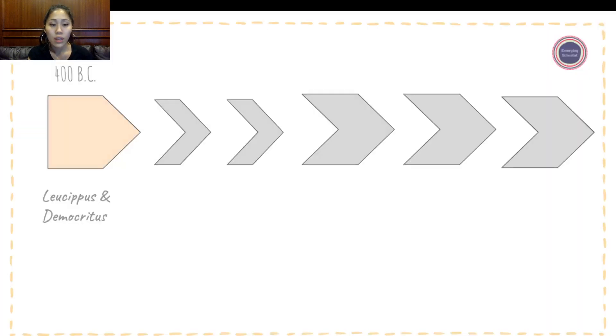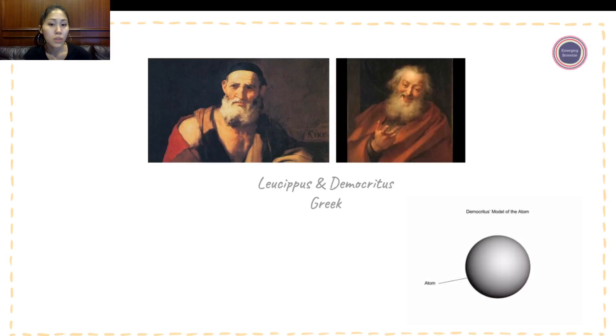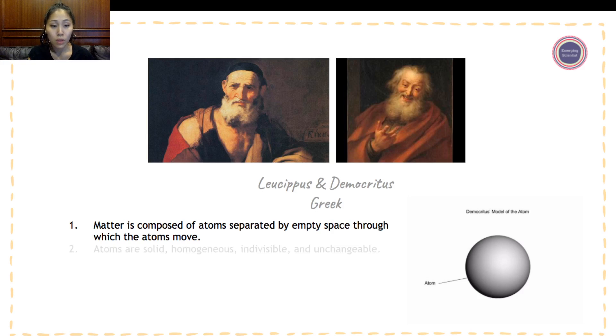Starting with Leucippus and Democritus, they came up with five main theories of atoms. Leucippus and Democritus are Greek philosophers, and they came up with, number one, matter is composed of atoms separated by empty space through which the atoms move. The second part they came up with was atoms are solid, homogeneous, indivisible, and unchangeable.